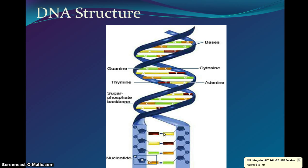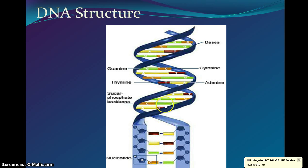You have the phosphate and sugar — as Miss Garcia said they make up the sides of the ladder, and then you have nitrogenous base pairs that pair up on either side to make what we call the rungs.